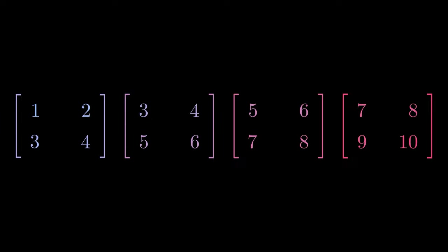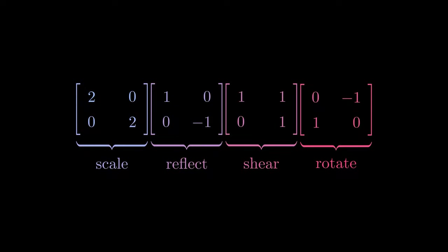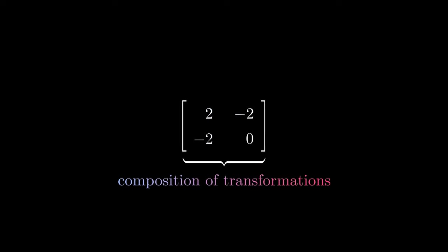If I have a series of 2x2 matrix, then I can compress them into one single 2x2 matrix. Since transformation can be expressed in matrix, therefore compressing a series of transformation is doable.